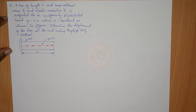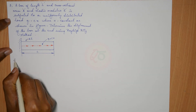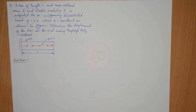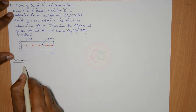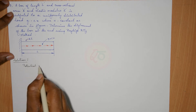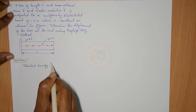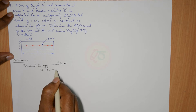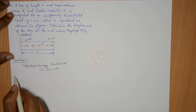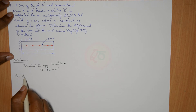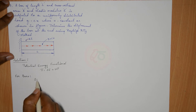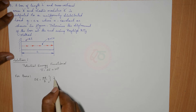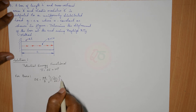To find the solution we proceed with the same steps. The first step is to obtain the potential energy functional. The potential energy functional is given by pi equals strain energy plus work potential. For bars, the strain energy is equal to AE by 2, integrated from 0 to L, of (∂u/∂x)² dx.